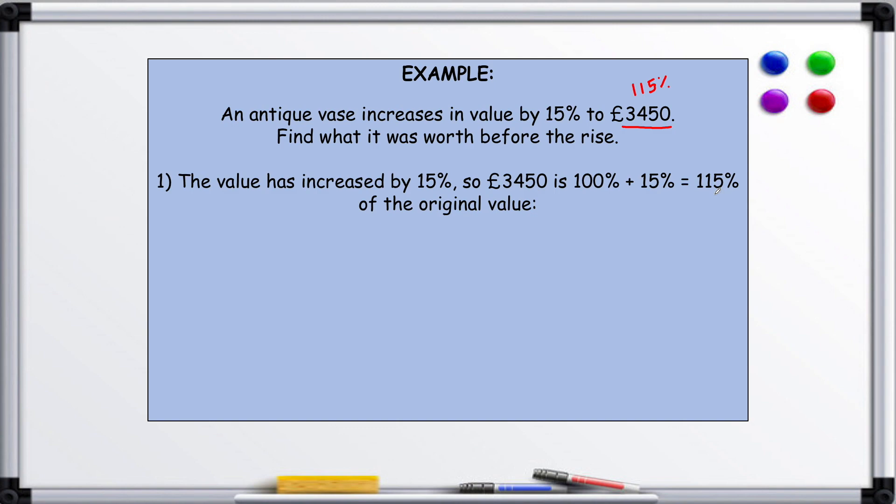Then what we do is divide this by 115. So £3,450 divided by 115, that would give us 1%. And then we multiply by 100 to find that 100%. So you divide by 115, then multiply by 100.